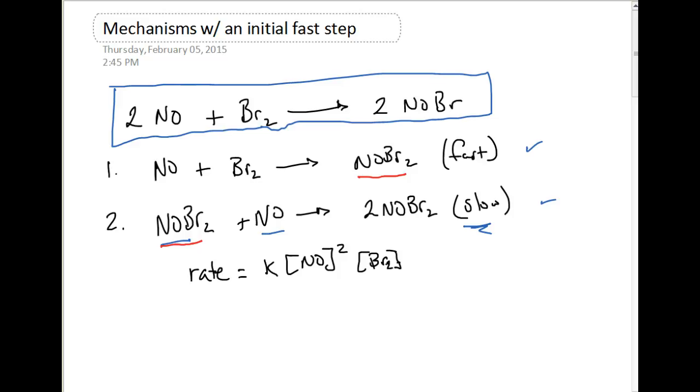So we have a really fast production of an intermediate and a really slow consumption of an intermediate. And typically what happens is we have an increase in the concentration of our NOBr2, that product. And it doesn't always have to be an intermediate, it could be to some other product.